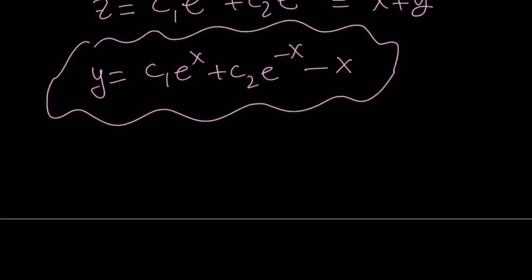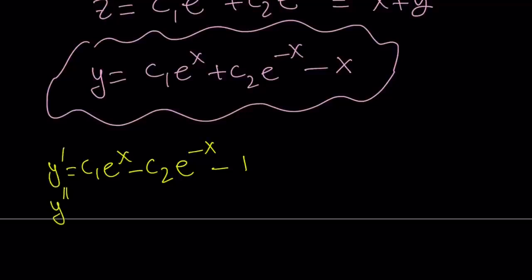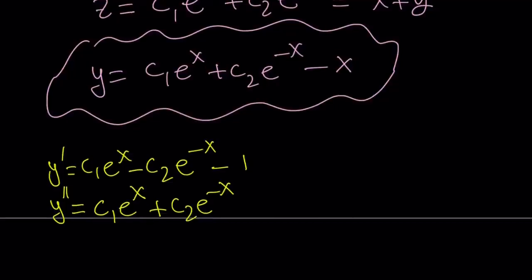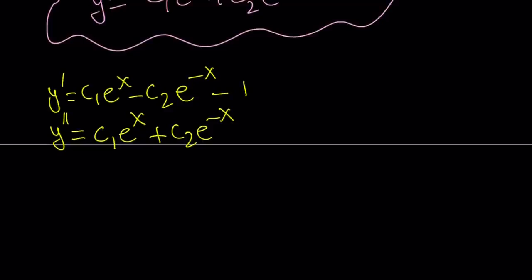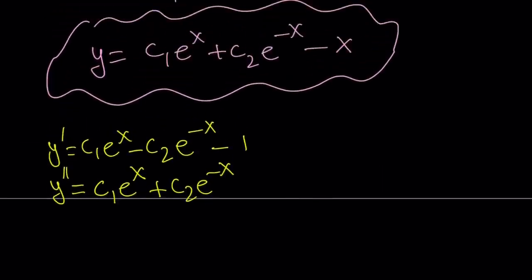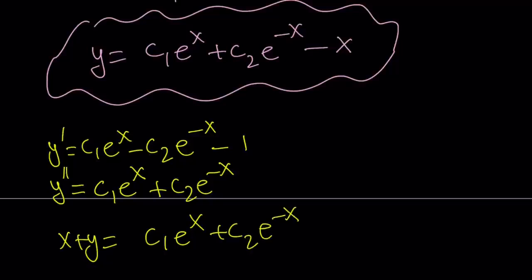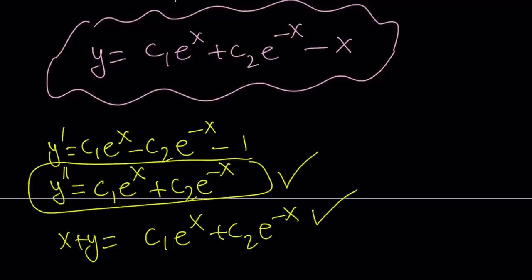If you differentiate y once, you get c1 e to the power x, and from the chain rule on e to the power negative x you get a negative 1, so it's negative c2 e to the power negative x, and the derivative of negative x is negative 1. That's y prime. Differentiating again gives y double prime: c1 e to the power x plus c2 e to the power negative x. Now in the equation we were given y double prime equals x plus y. If you add x plus y, you get c1 e to the x plus c2 e to the negative x — the same as y double prime. Therefore the two are equal and our solution checks.